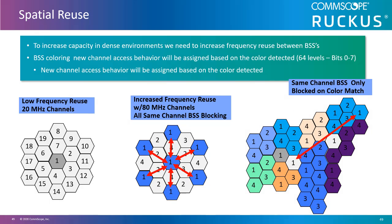In 802.11ah, they were trying to figure out how to manage co-channel interference differently than the typical deferral. 802.11ah introduced a scheme called BSS coloring so you can assign a different color identifier to each BSS and distinguish between co-channel BSS interference. There are 64 levels of color using bits 0 through 7, and frames from neighboring BSSes or SSIDs can be treated differently when assessing channel availability.